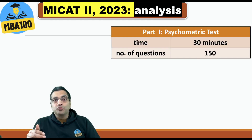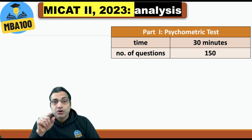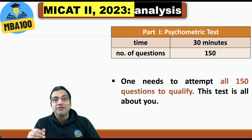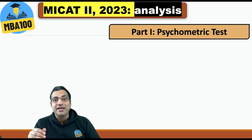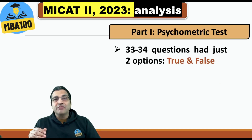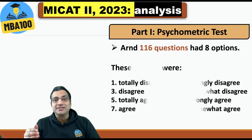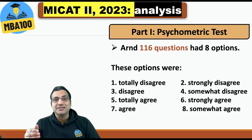When it comes to the psychometric test, the most important thing is that the test is about you and you need to attempt all 150 questions. There were 33 to 34 questions which had only two options — true and false — but the remaining questions had 8 options.